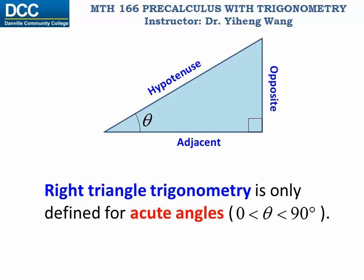As I mentioned before, although right triangle trigonometry is very simple, it can only be used to define trigonometry for acute angles — angles that are within 0 and 90 degrees, angles that can be represented using a right triangle. However, we wish for a more general definition for trigonometry. To do that, let's first look at the definition of angles.